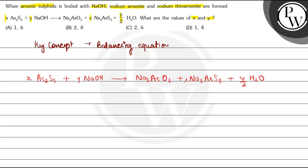First, if we see the number of As on the reactant side it is 2 and on the product side it is also 2. That means if we write X is equal to 1, then As is balanced.